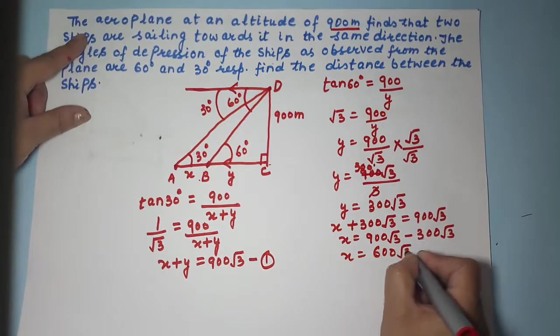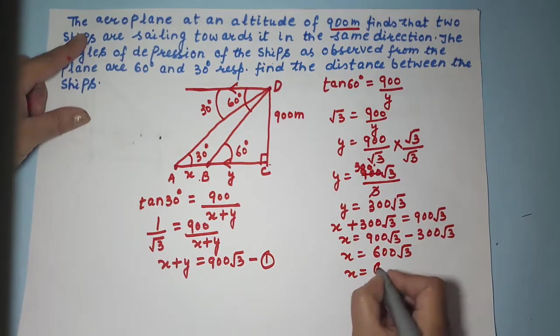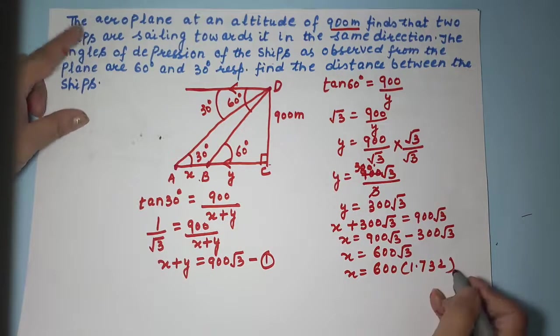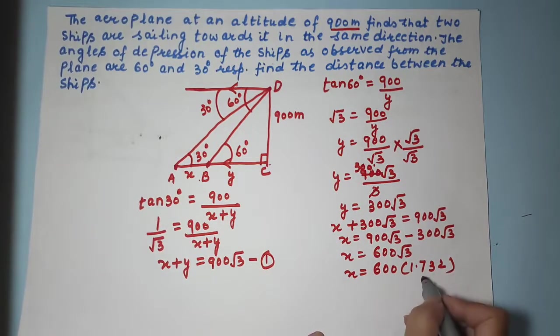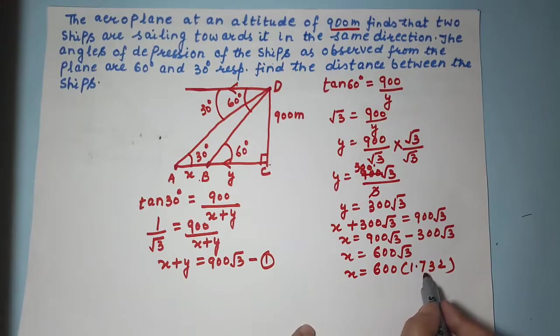So now we know the value of X. Root 3, how much is that? 1.732. So this value may be given sometimes and sometimes it won't. But in the equation it will be written that find the answer to nearest decimals that means you have to replace this value. So that means you need to remember the value of root 3.